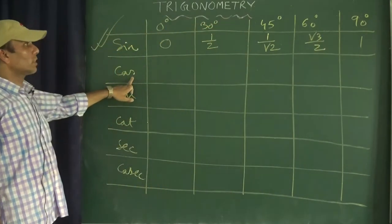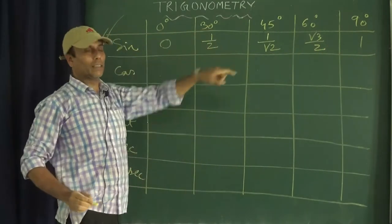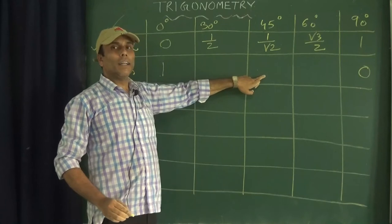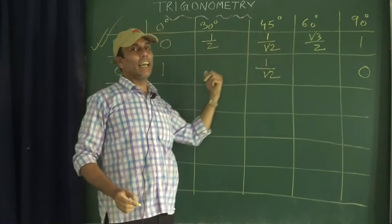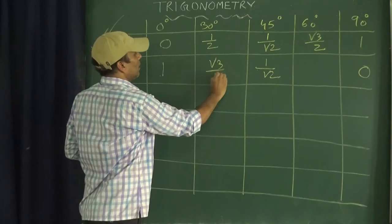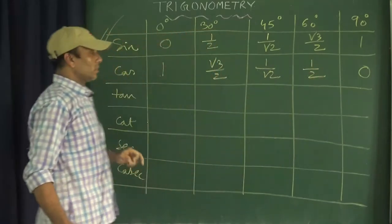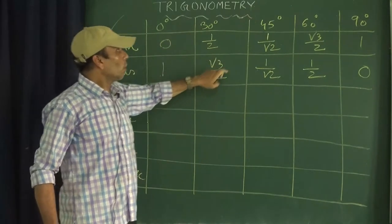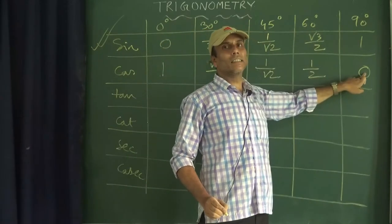For getting the values of cosine, we do a cross — the last sine value comes first and the first goes last. The middle value (45°) remains the same. Between 30° and 60°, we cross again. So: cos0° = 1, cos30° = √3/2, cos45° = 1/√2, cos60° = 1/2, cos90° = 0.